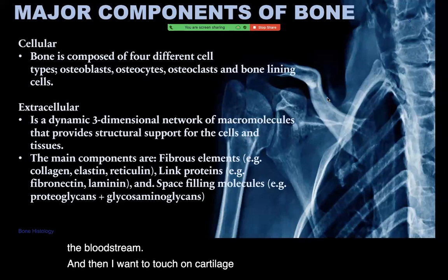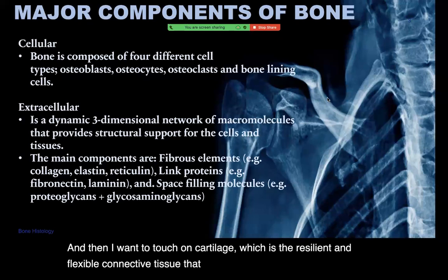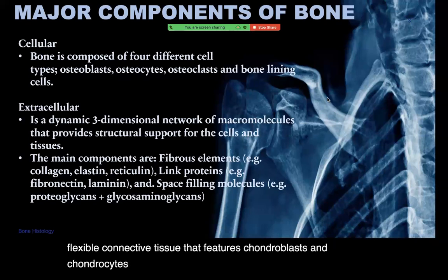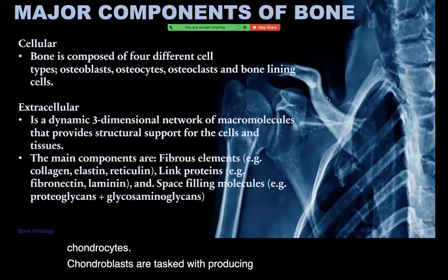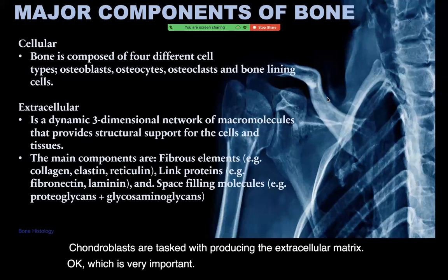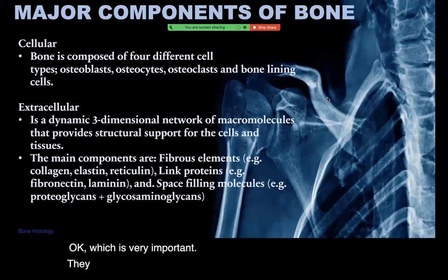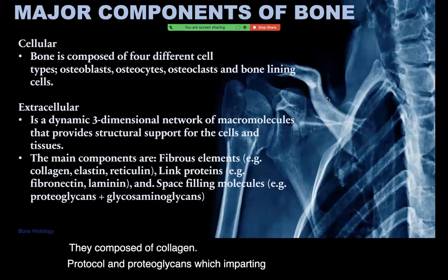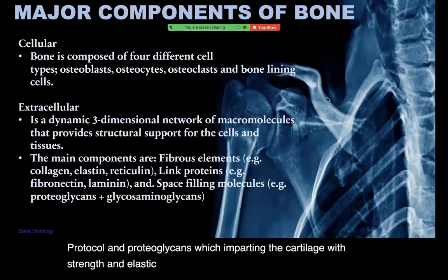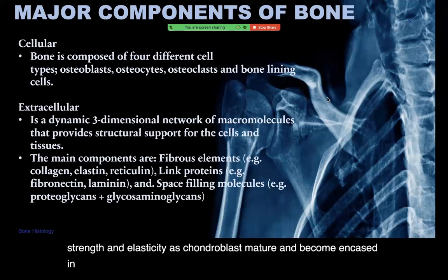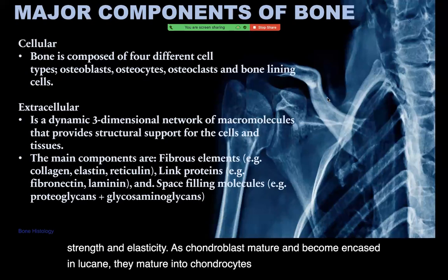Cartilage is the resilient and flexible connective tissue that features chondroblasts and chondrocytes. Chondroblasts are tasked with producing the extracellular matrix, which is composed of collagen, proteoglycans, imparting the cartilage with strength and elasticity. As chondroblasts mature and become encased in lacunae, they mature into chondrocytes, maintaining the structural integrity of the cartilage matrix.